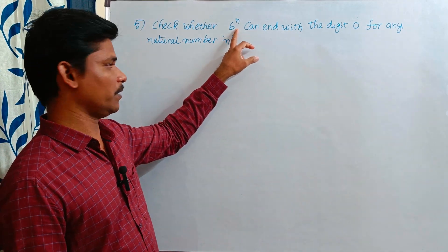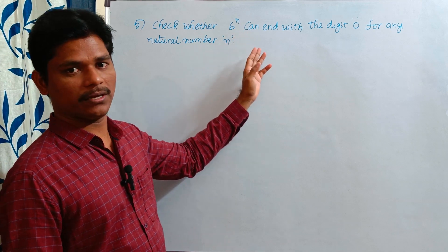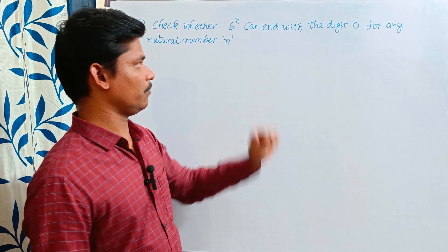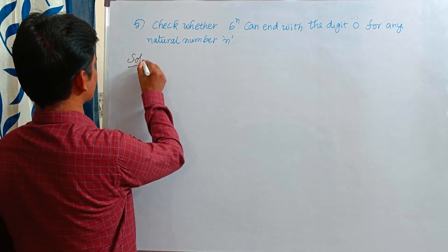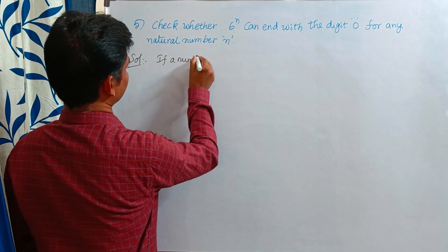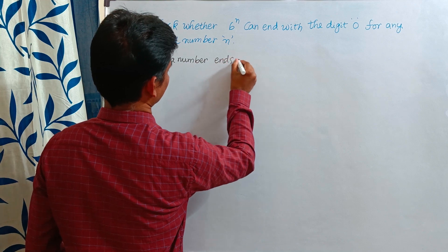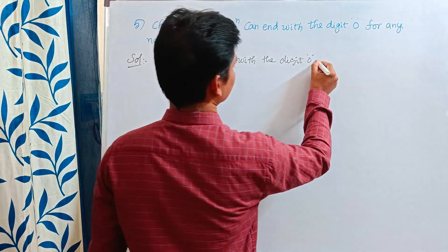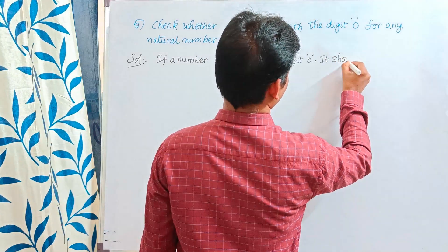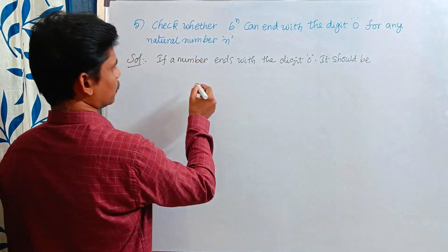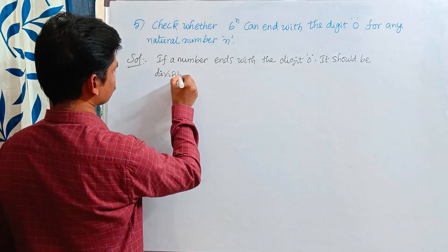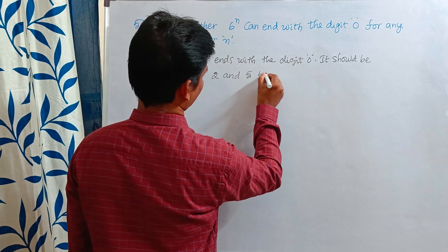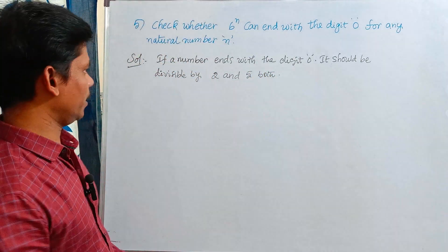So 6 is the given number. It should not end with 0. Why? Because if a number ends with the digit 0, it should be divisible by both 2 and 5. Then only it is possible.